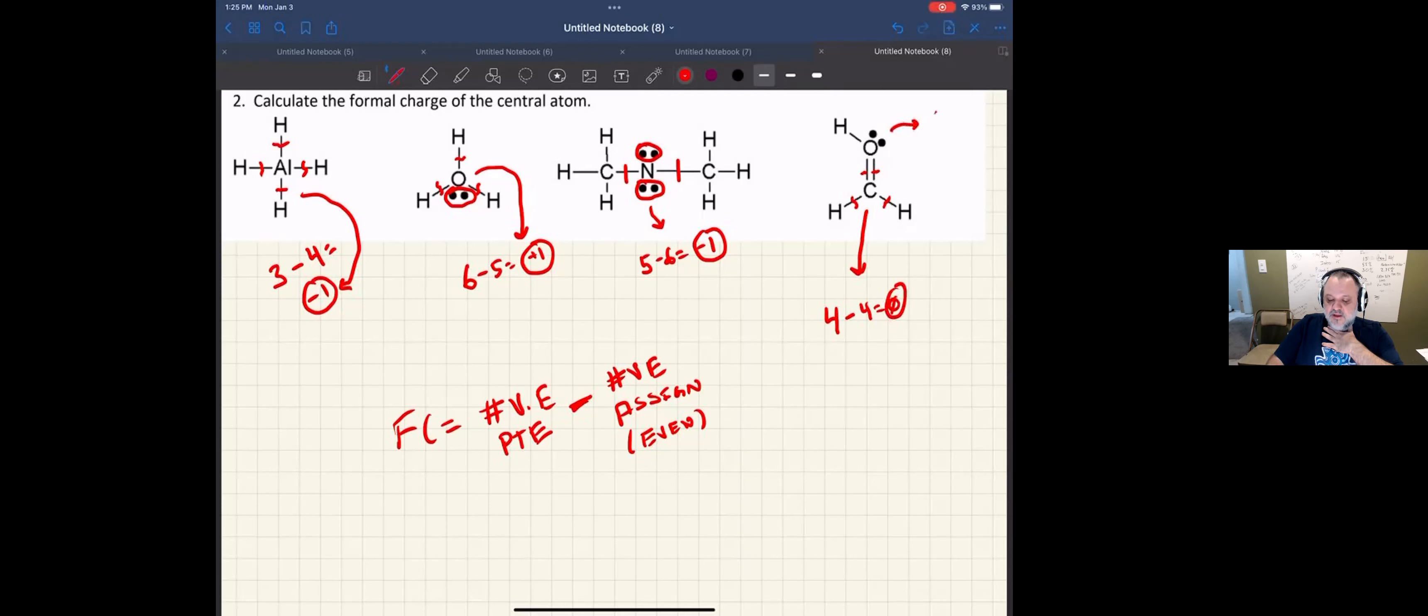What about the oxygen? Again, group 16, it's six minus the number I assign, one, two, three, four, five. That's plus one for the oxygen.